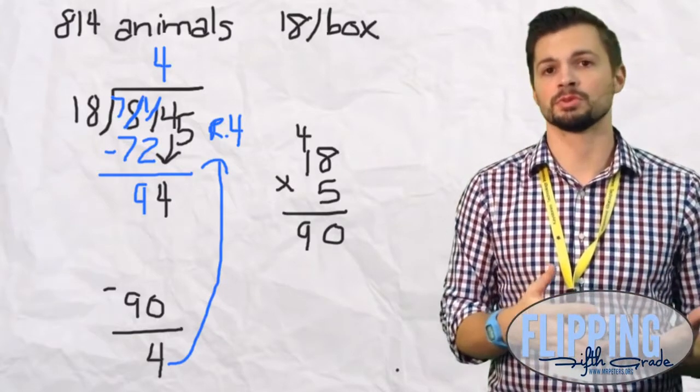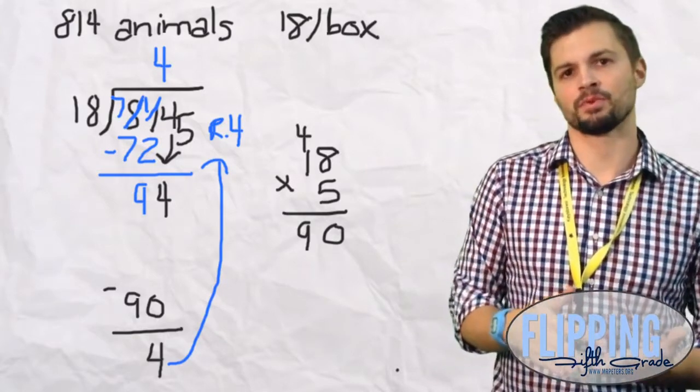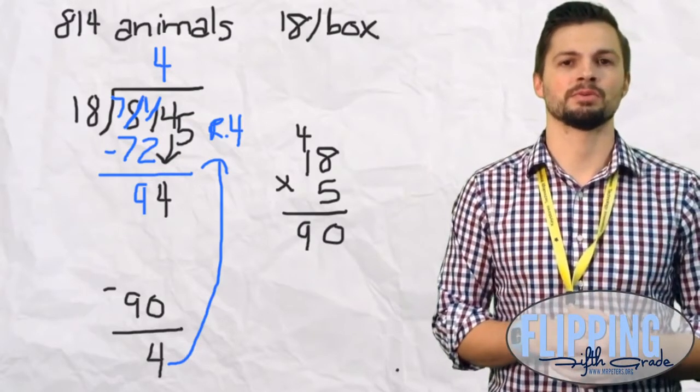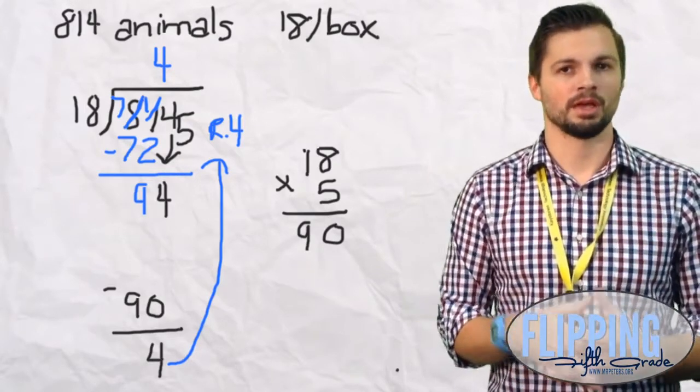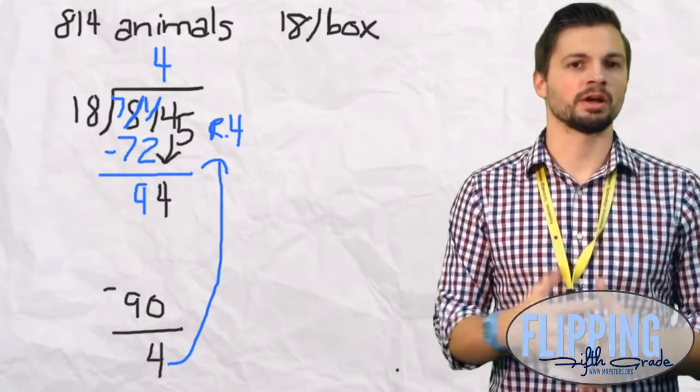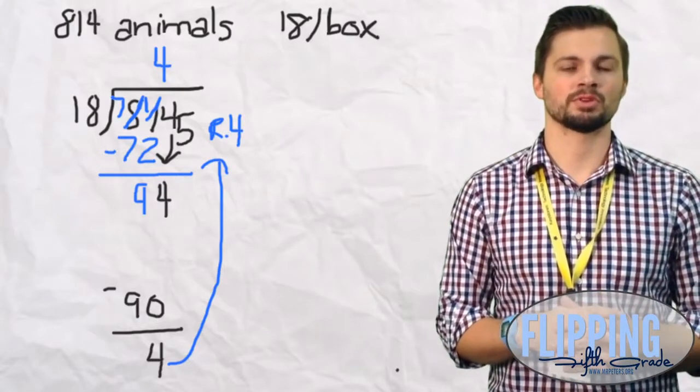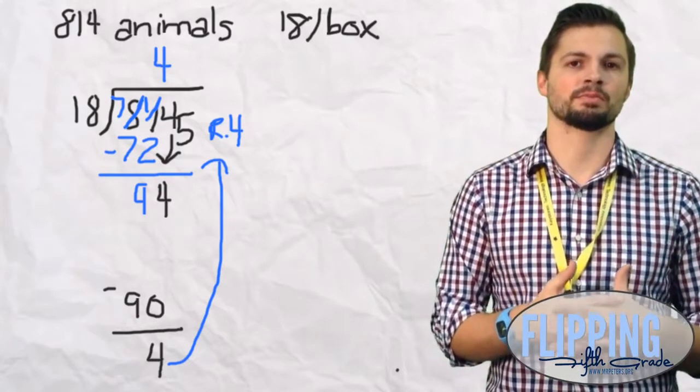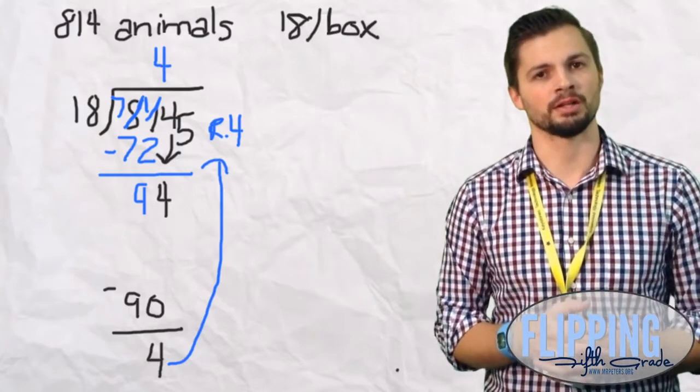That's where using reasonableness is if they didn't get that 46th box, they would have 4 stuffed animals that they would not be able to ship out. And if you're a business, you're losing money on those 4 stuffed animals. So you want to use reasonableness at the end of the problem after you find the solution to get your true answer.